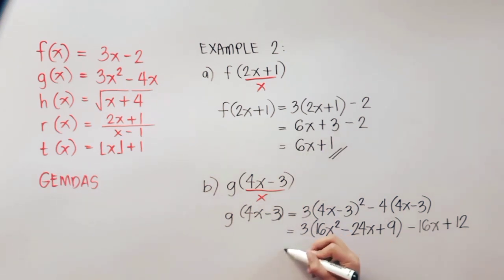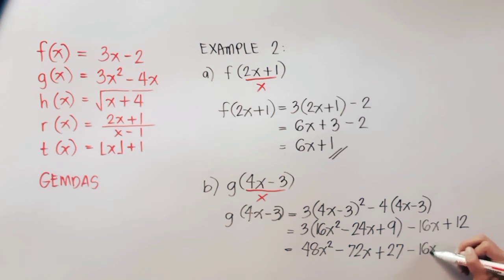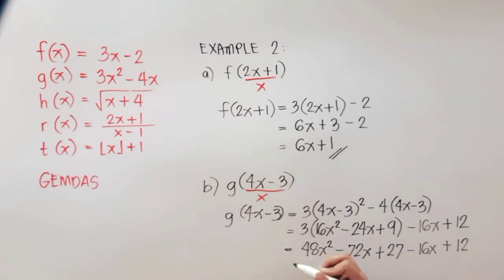Next is to distribute 3 on all terms here. So 3 times 16x squared, that is 48x squared. 3 times negative 24x, so that is negative 72x. And then 3 times 9, that is positive 27. And then copy these two terms here.